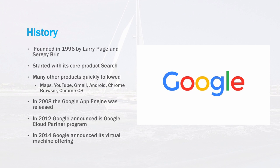Google was founded in 1996 by Larry Page and Sergey Brin. As mentioned earlier, Google started with its core product, which is Search. Until that time, finding things on the internet was a difficult process. Google made Search extremely easy to use, and they offered great accuracy and reliability. After the introduction of the Search product, other products quickly followed.